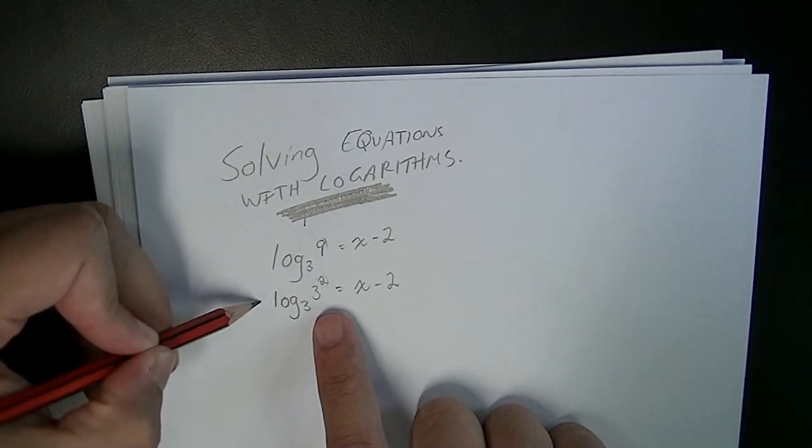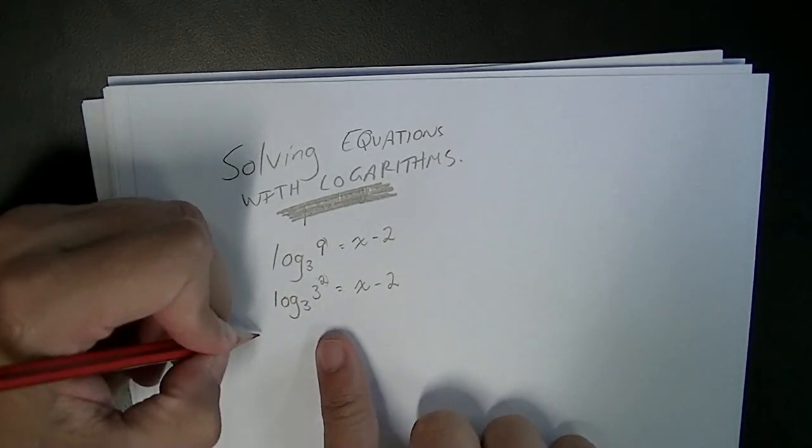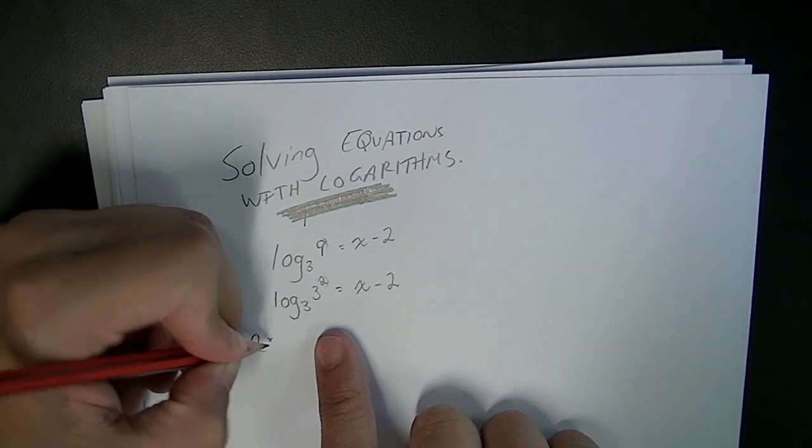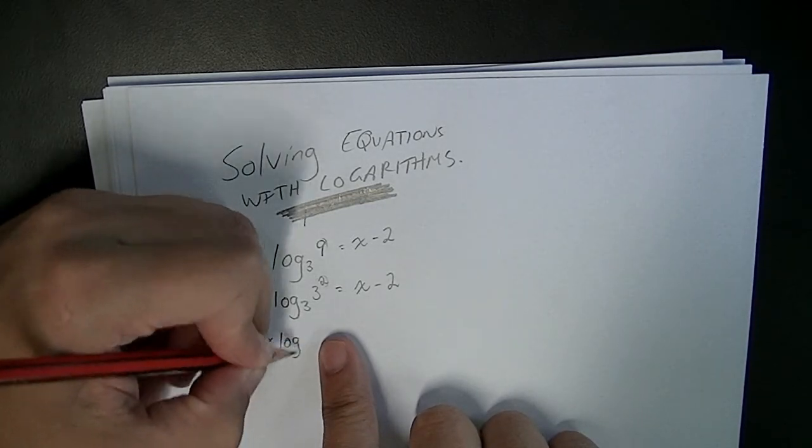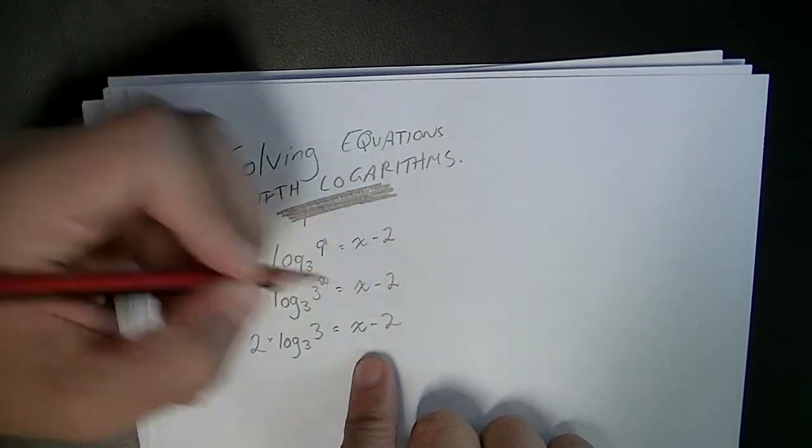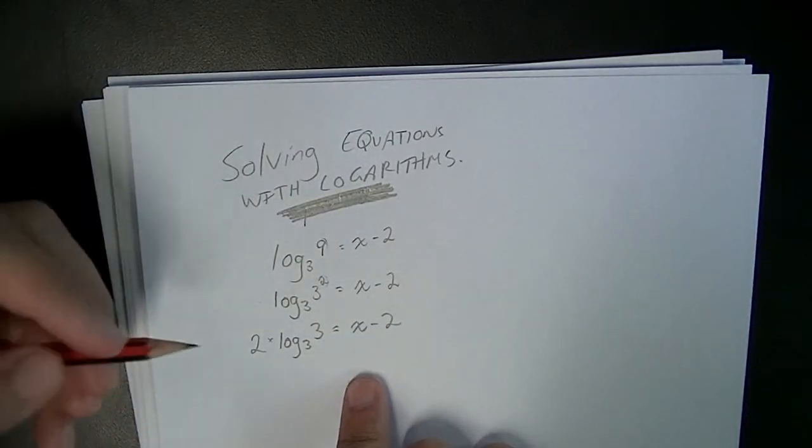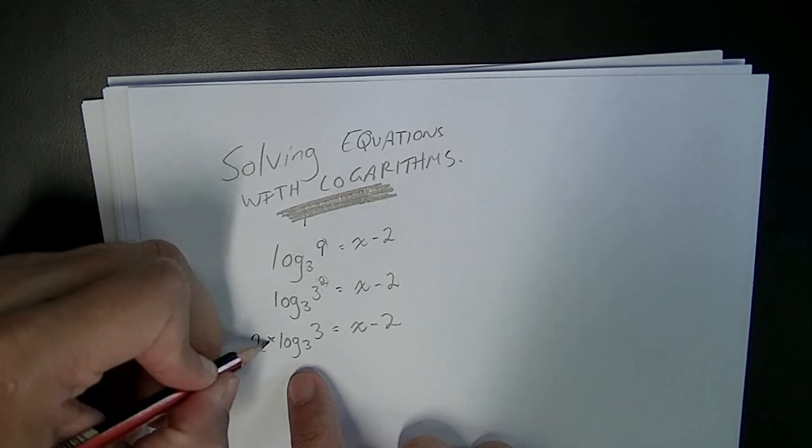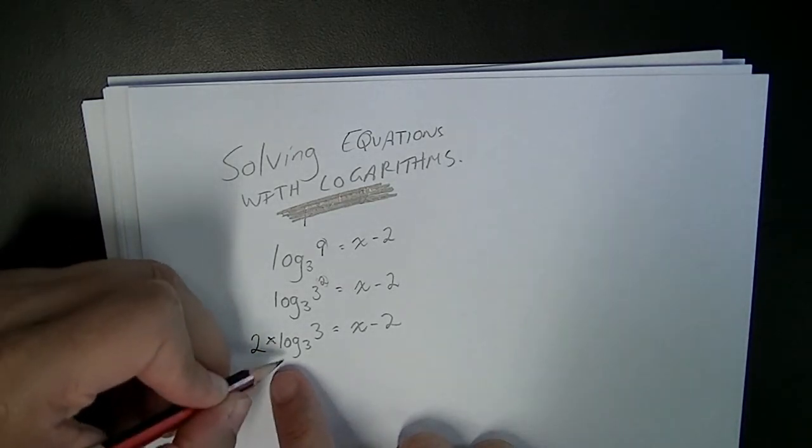We can take that 2 and move it out to here. So that's going to end up as being 2 times log base 3, 3 is equal to x minus 2. Now that's 2 times, just so you can see that, you could have just written 2 log base 3, 3.